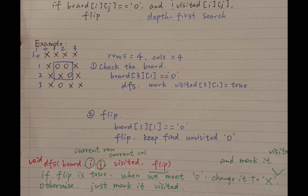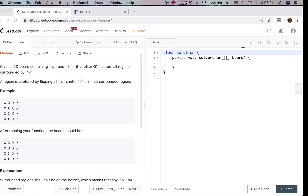We use one function that takes the board, current row, current column, and the visited array. We also use a boolean variable `flip` to mark whether we need to flip the current O. If `flip` is true, when we meet an O, we change it to X and mark it as visited — meaning we are in the inner region. Otherwise, we just mark it as visited, meaning we are on the border. Okay, let's write the code now.